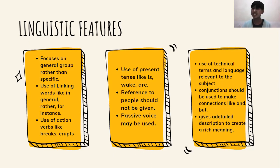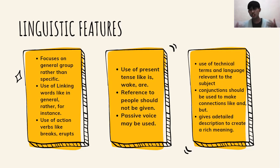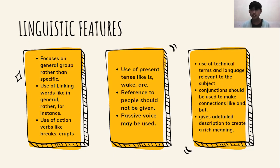Reference to specific people should not be given. Passive voice may be used — because in explanation text we may use passive voice, which I'll explain in the next slide. Use of technical terms and language relevant to the subject. Conjunctions should be used to make connections light and clear — conjunctions are important for making sentences flow well. And finally, it gives a detailed description to create a rich meaning.